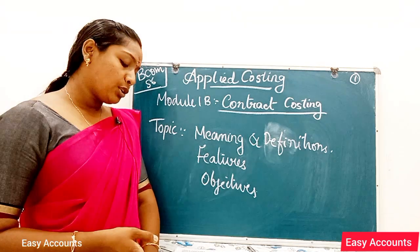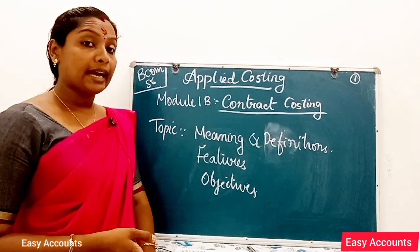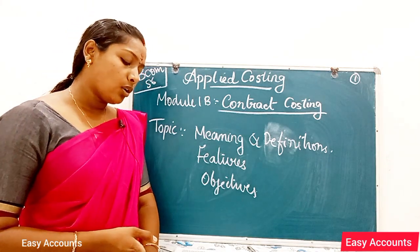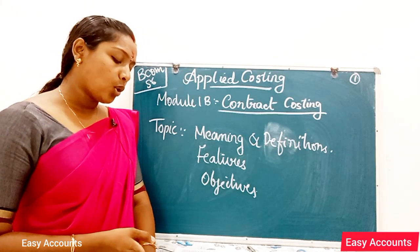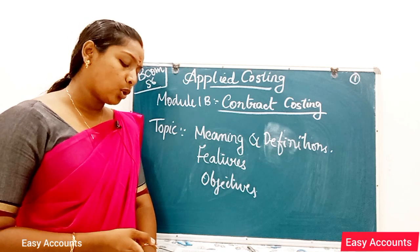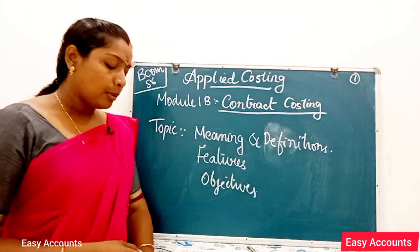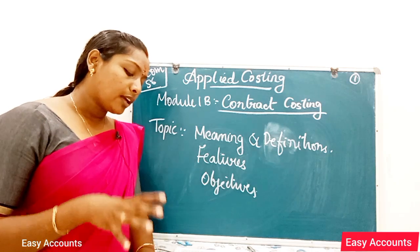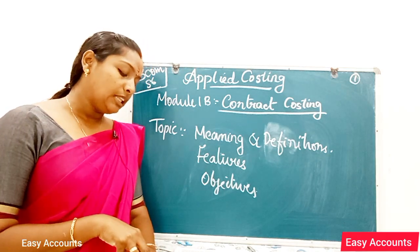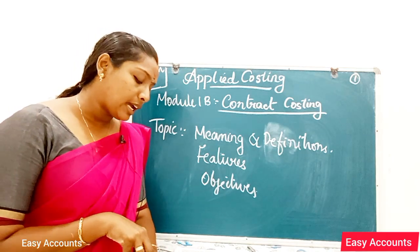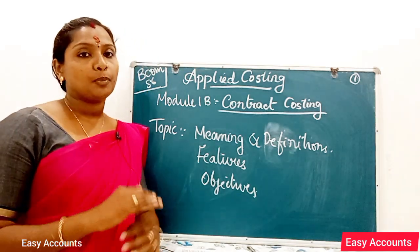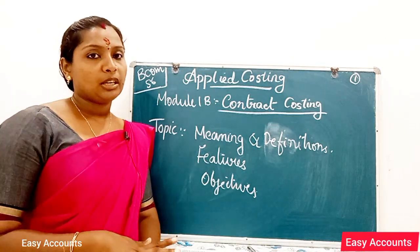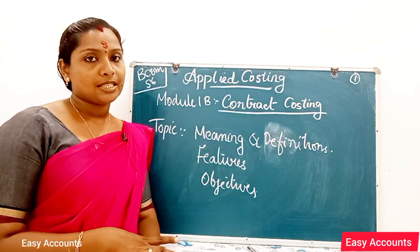Another feature is Direct Cost. Direct cost connected with the contract usually constitutes a major portion of the total cost of the contract. Direct cost includes direct material, direct labour, and direct expenses.